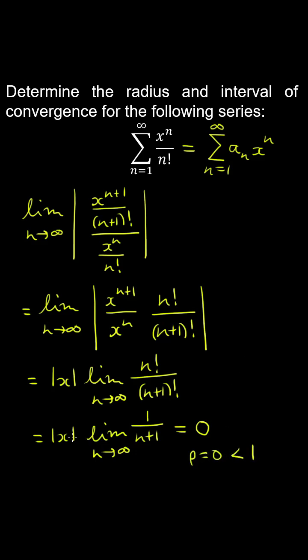This means the series converges for all values of x. So effectively, the radius of convergence is infinity, and the interval of convergence is minus infinity to infinity.